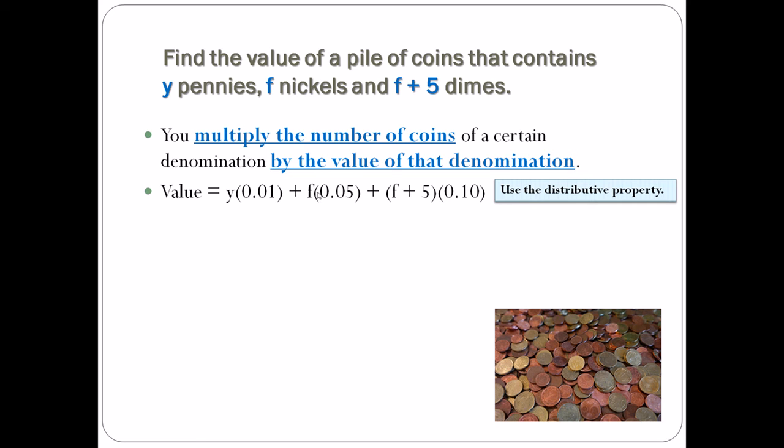f times 0.05 is 0.05f. But right here I have a quantity—I have this adding part—and I have to give the 10 cents to the f and the 10 cents to the 5. So f times 0.10 is basically 0.10f, and I have to do 5 times 10 cents. 5 times 10 cents is 50 cents, so 0.5. You did it, ta-da!